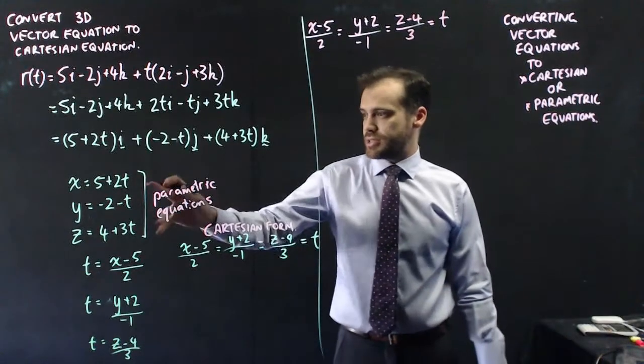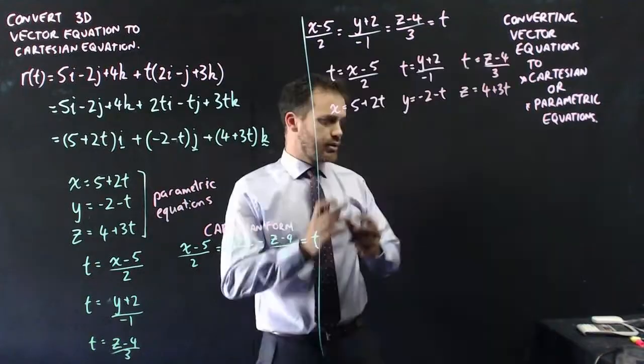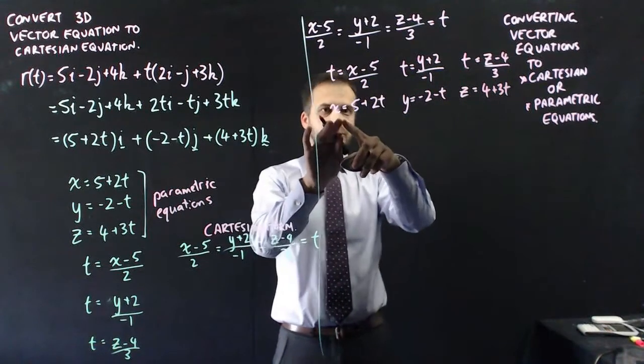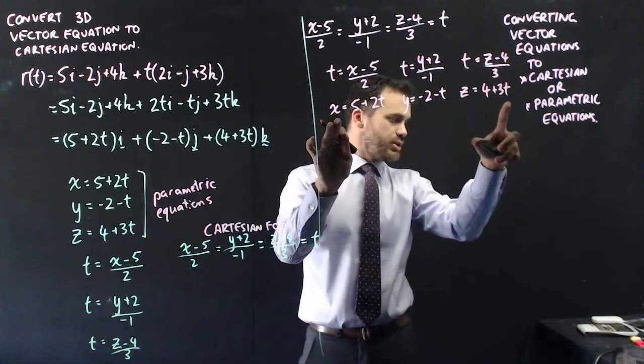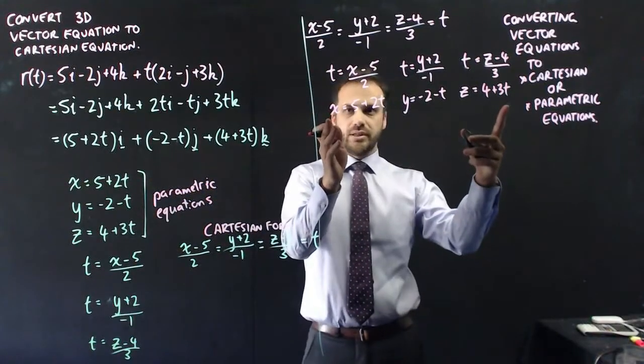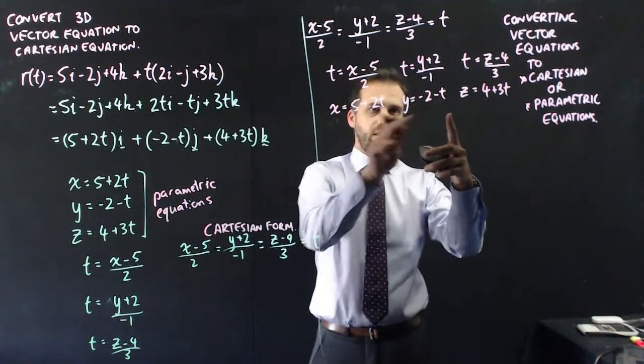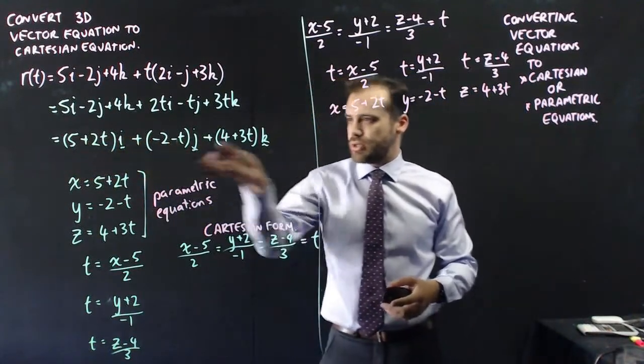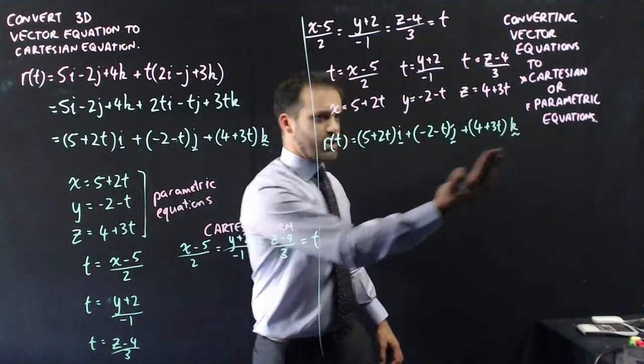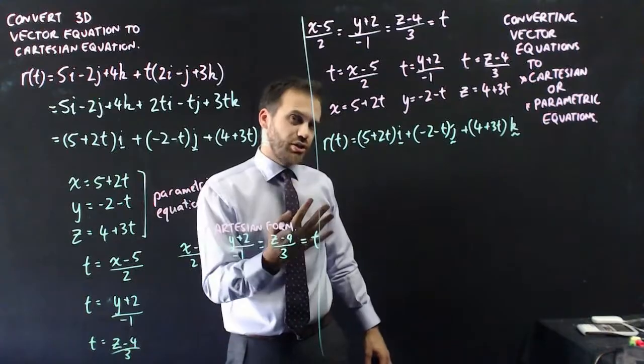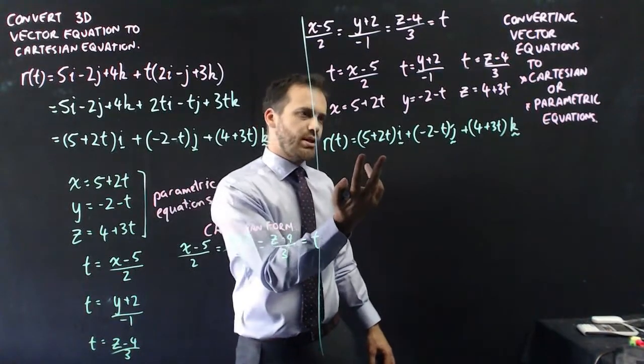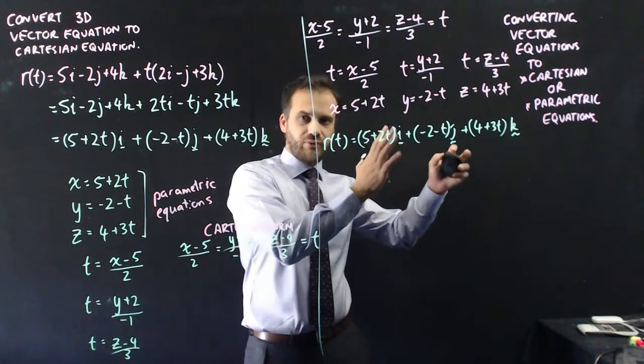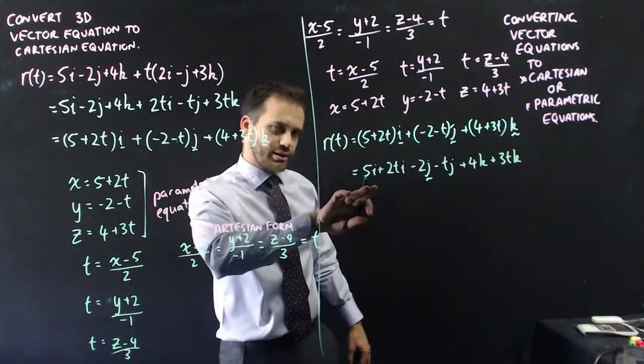I can write each of those as parametric equations. So there we have it, t equals that, t equals that, t equals that, and then rearranging them to make them into our parametric equations. They should look very, very familiar. Now, that's going to be our x-coordinate, that's going to be our y-coordinate, and that's going to be our z-coordinate. So we can put it back into a vector equation. Now, that is a vector equation at this point, but it's not the convention that is a vector equation. For that, we need to expand all of our brackets, and then group all of our t variables on one side and all of the others on the other.